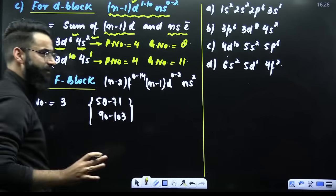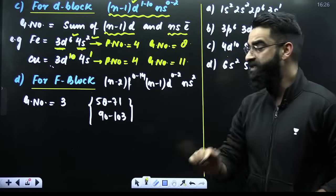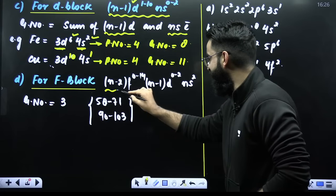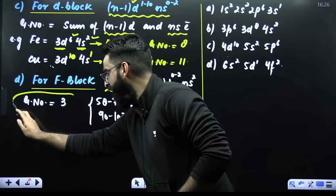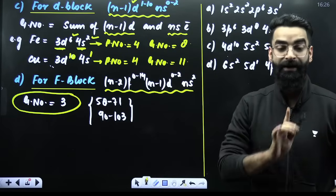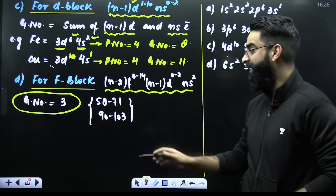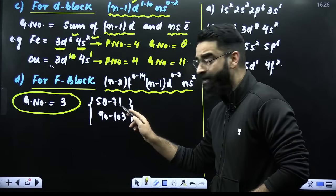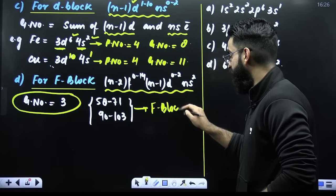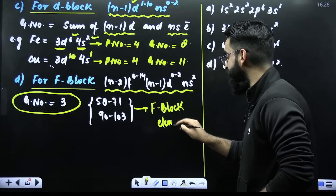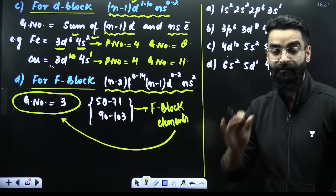In case of F block elements, you do not need to remember any formula. All your F block elements belong to the third group. Whenever you see an element whose atomic number is from 58 to 71 or from 90 to 103, remember these are your F block elements — lanthanoids and actinoids — and all of them belong to the third group of the modern periodic table.